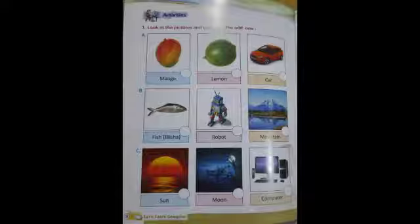Next question number B: fish is not a man-made thing. We love to eat fish. Robot is a man-made thing. Robot is a machine. Robots help us to do our task. Next, mountain. Mountains are very beautiful. Mountains are natural things.